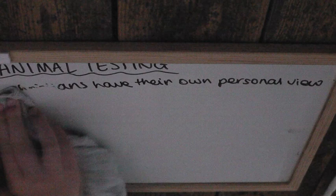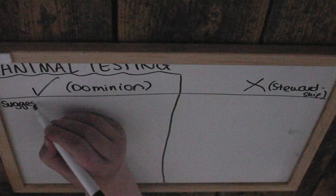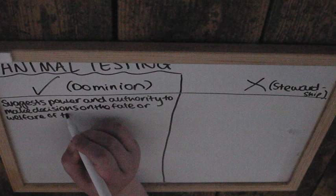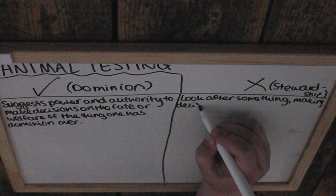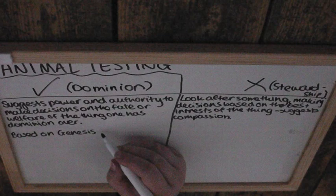There are two sides to the argument, and Christians generally have their own personal view. Being for animal testing is often associated with dominion, and being against it is associated with stewardship. Dominion suggests power and authority over something — being in charge of it, but not necessarily in a caring way. Stewardship means looking after something and making decisions based on the best interests of what you're caring for, suggesting a more compassionate role.